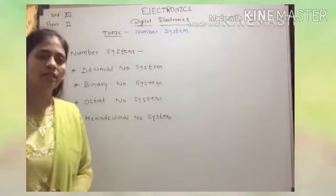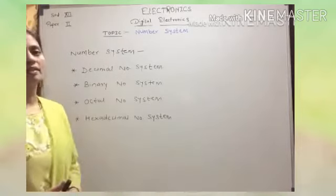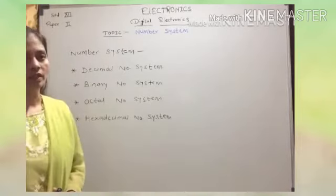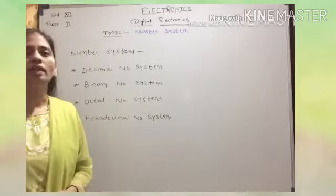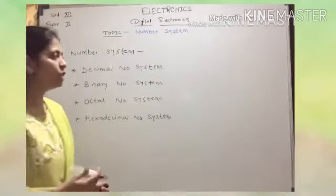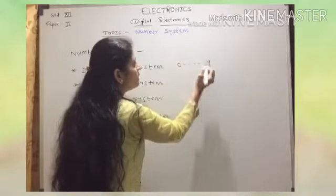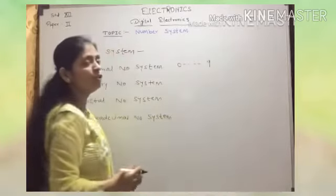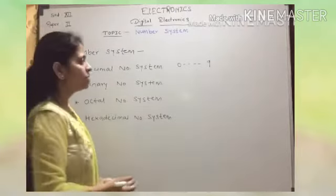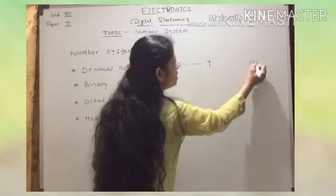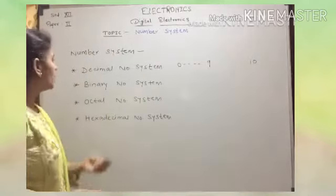All these number systems have different radices and different symbols. In the decimal number system, we are using ten symbols — that is 0 to 9. That's why the radix of this number system is 10.